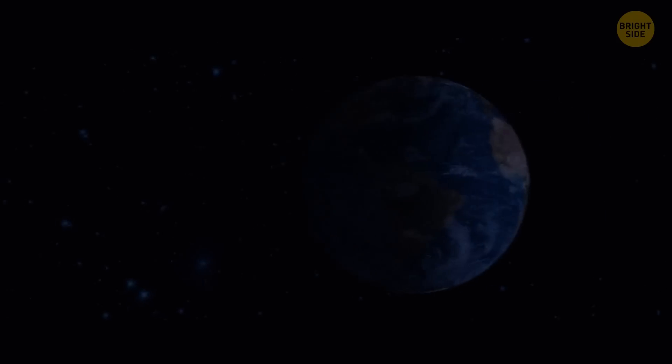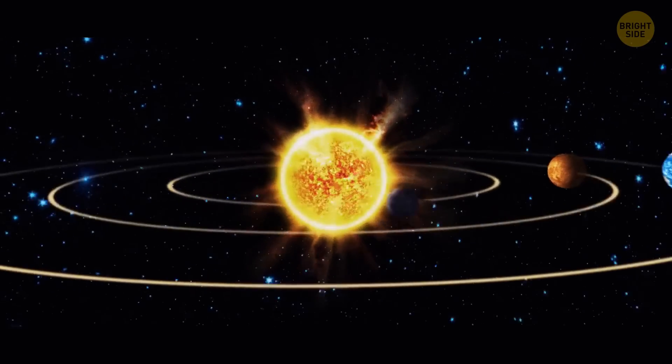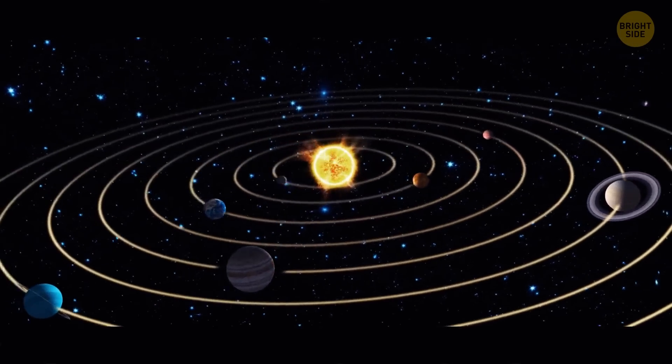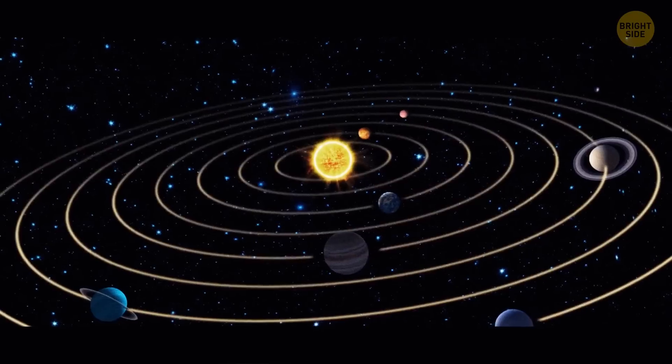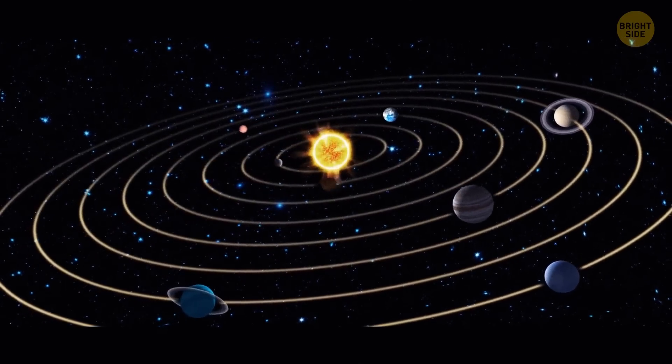Our Sun is insanely massive. Want some proof? 99.86% of all the mass in the solar system is the mass of the Sun. In particular, the hydrogen and helium it's made of. The remaining 0.14% is mostly the mass of the solar system's eight planets.